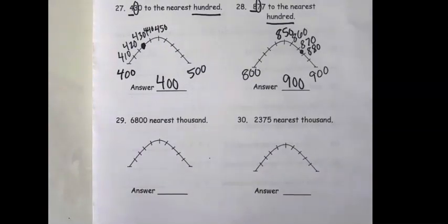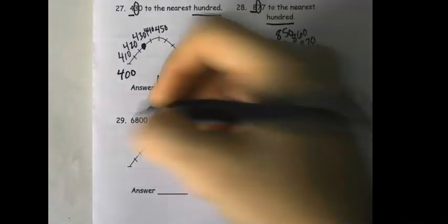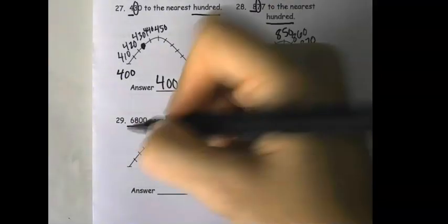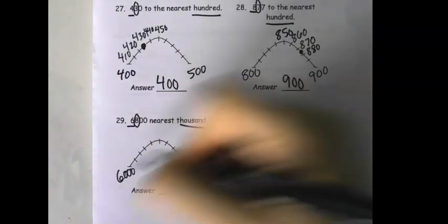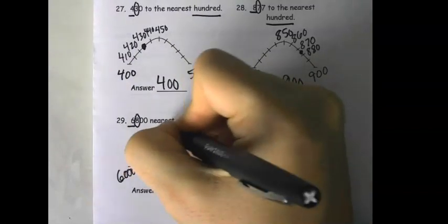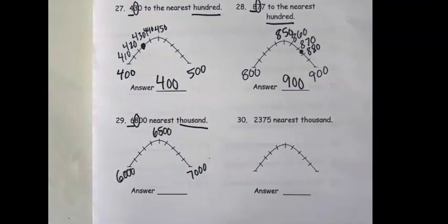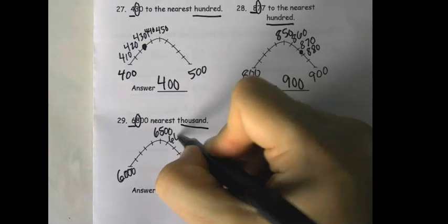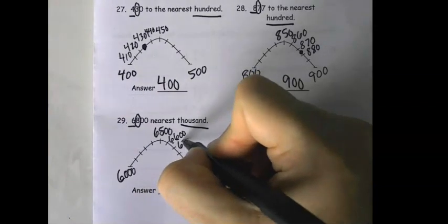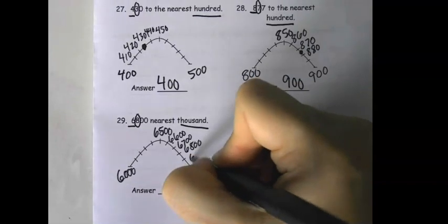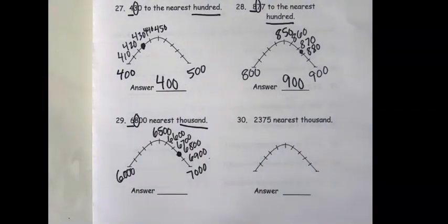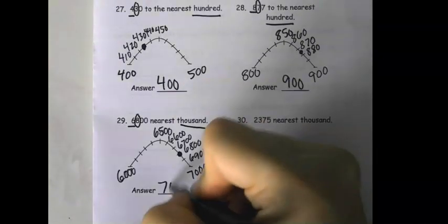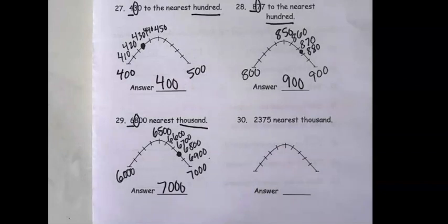We have 680 rounded to the nearest thousand. So this one is the 1,000s place. I'm going to underline the 1,000s place. I'll be making my decision based on the 100s place, which is immediately to the right. So, it's closer to 6,000 or 7,000. Well, right in the middle is 6,500. Then we have 6,600, 6,700, 6,800, 6,900. My dot's right there. It's closer to 7,000 than it is to 6,000.